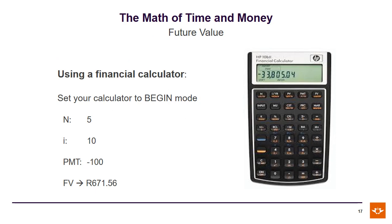Once again, for a problem like this I would recommend the use of your financial calculator. Please be aware that it must be set to begin mode for you to get the correct answer. Setting it to begin mode, input N equals 5, I/Y equals 10, payment equals minus 100, and you end up with a future value of R671.56.